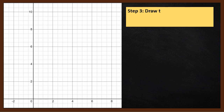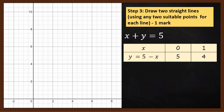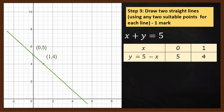Step 3: On the graph sheet, plot two suitable points for each equation and draw two straight lines. For the first line, x plus y equals 5, we pick the points (0, 5) and (1, 4). Plot these points on the graph and join them to draw a straight green line representing x plus y equals 5.